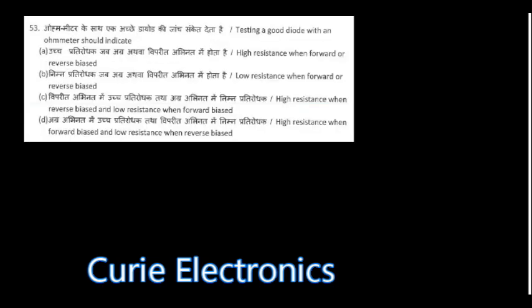Testing a good diode with an ohmmeter should indicate low resistance when forward biased and high resistance when reverse biased. Option C is the right answer: high resistance when reverse biased and low resistance when forward biased.